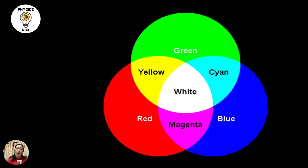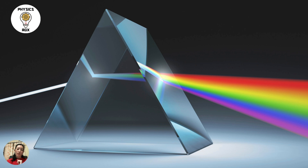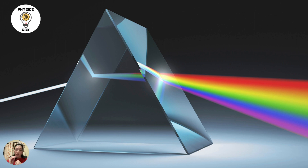What happens when we shine white light through a glass prism? Due to refraction, the white light will separate out into the different colours of the rainbow. I'll explain in a short while why this dispersion happens, but before that, you must remember the sequence of the colours in the rainbow.